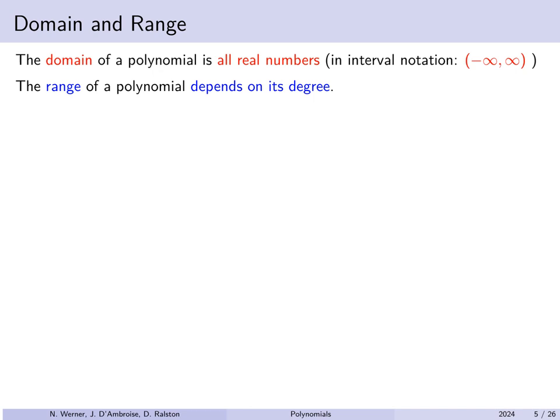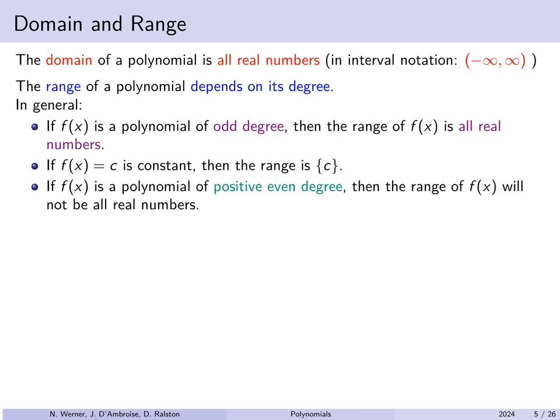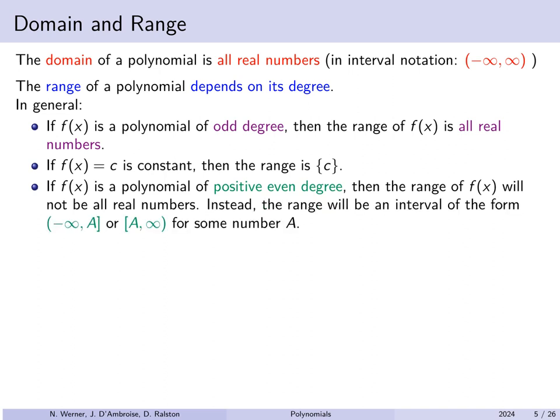The range of a polynomial depends on the degree. If the degree is odd, the range will be all real numbers. If the polynomial is degree 0 (constant), the range is just that single constant value. But if the degree is even and positive, the range will be an interval either from −∞ up to some maximum value, or from some minimum value up to +∞.